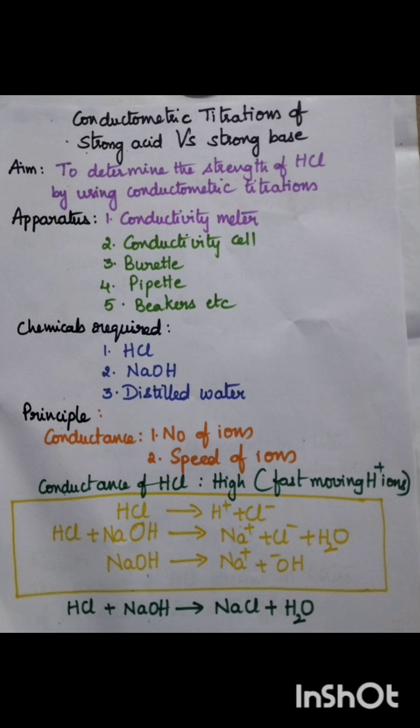In general, conductivity cell consists of both anode and cathode which are made up of platinum. Chemicals required: HCl, NaOH, and distilled water.